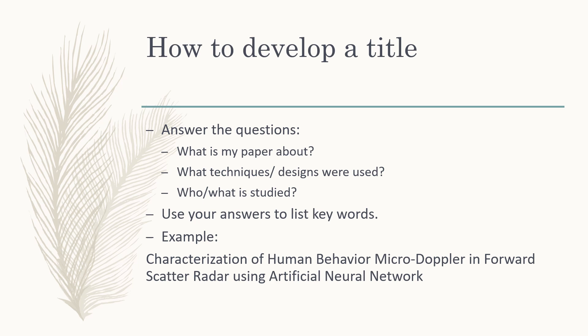How to develop a title? When you are trying to develop a title, you have to answer a few questions: What is my paper all about? What techniques or design am I going to use in my research? Who or what is being studied? Use your answers to list keywords. For example, the title 'Characterization of Human Behavior Micro-Doppler in Forward Scatter Radar Using Artificial Neural Network' — the paper is about characterization in forward scatter radar, the technique used is artificial neural network, and what is being studied is human behavior micro-Doppler.